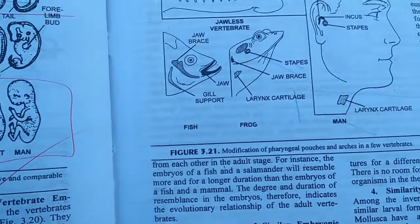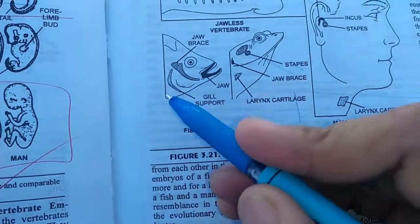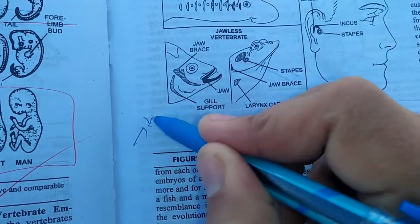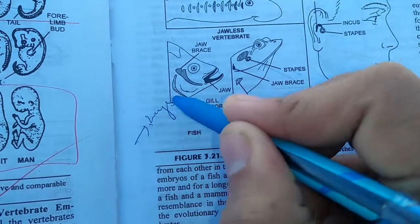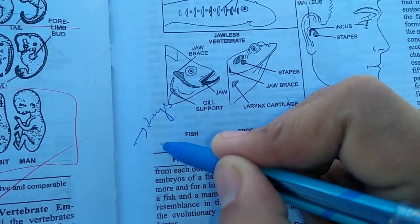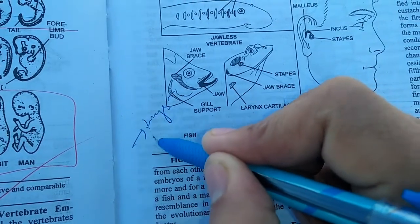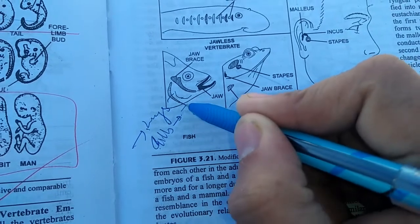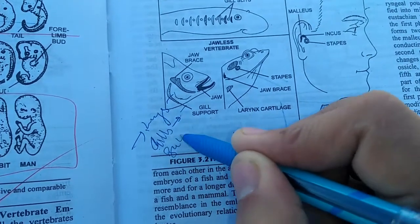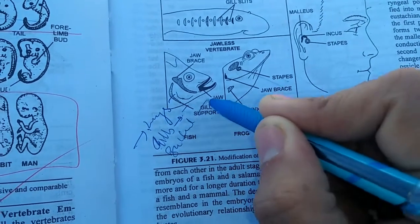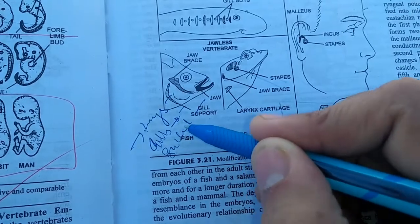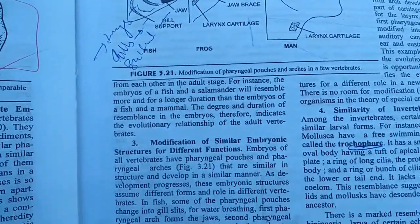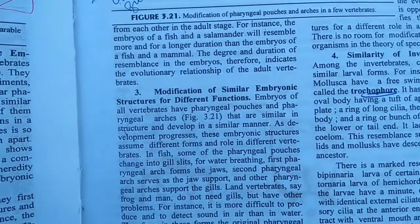Also, other modifications of the gill slits include: changing into the lungs in air-breathing animals, changing into the gills in aquatic respiring animals, and changing into the copharyngeal cavity and lungs in amphibians. So there is a very useful modification.